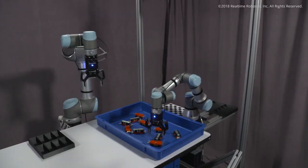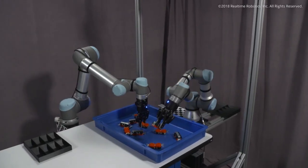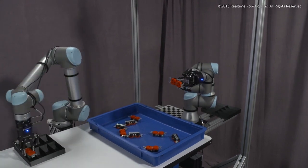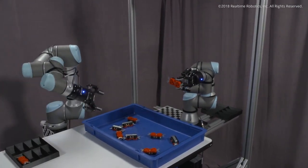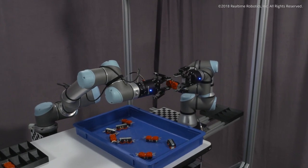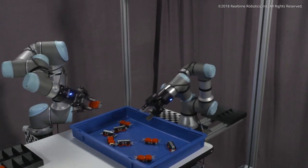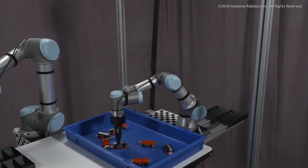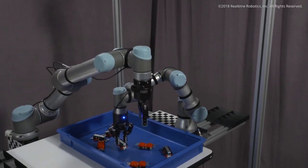Additionally, our processor allows robots to directly collaborate, even in dynamic environments. This example shows one robot assisting the other by picking misoriented objects and presenting them to be placed correctly by the second robot.